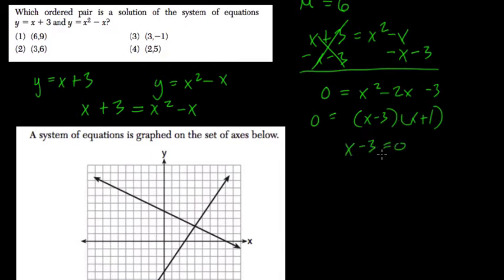So now if this is true, then x minus 3, if that equals 0, x equals 3. And if x plus 1 equals 0, then x equals negative 1. So our two points have to have 3 and negative 1 for your x values. So far, choice 1 and choice 4 are out.